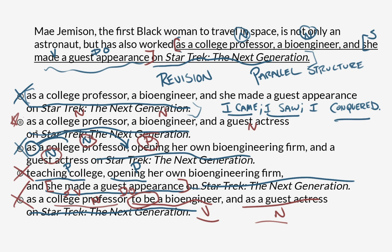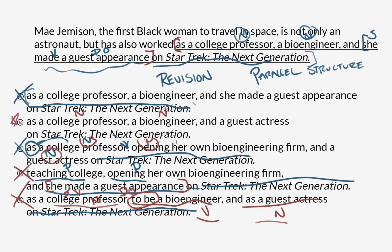That brings us back to answer choice B. We've got 'college professor' — noun; 'a bioengineer' — noun; and 'a guest actress' — noun. Noun, noun, noun: three equivalent items within the same list structure. This is parallel. So that's our answer.